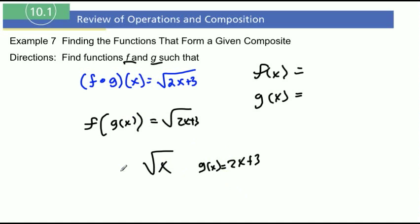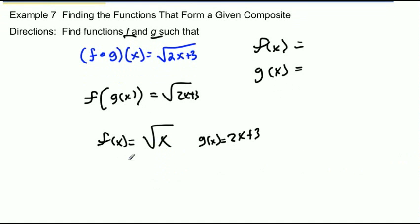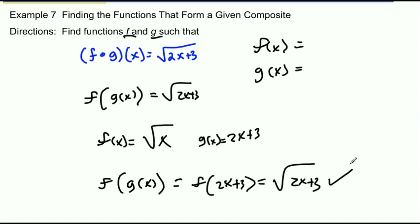So meaning if I did f of g of x, well that's equal to, I can replace g of x now with 2x plus 3. And now let's replace x with 2x plus 3, so that's square root of 2x plus 3, which is what we want right there.